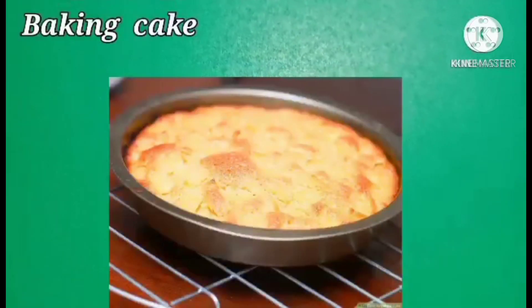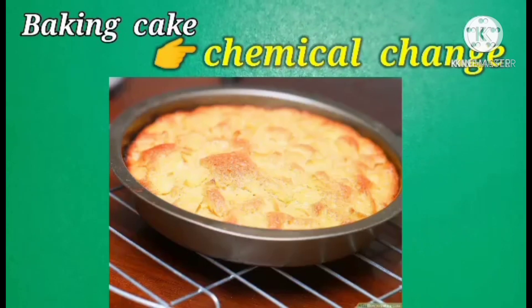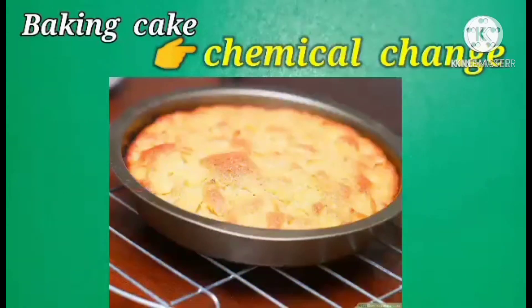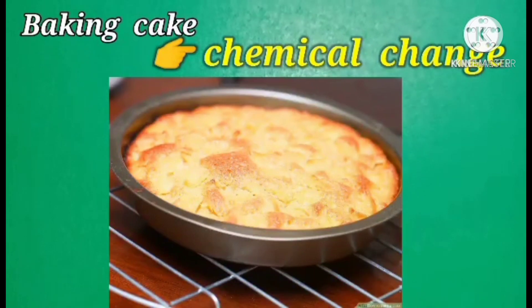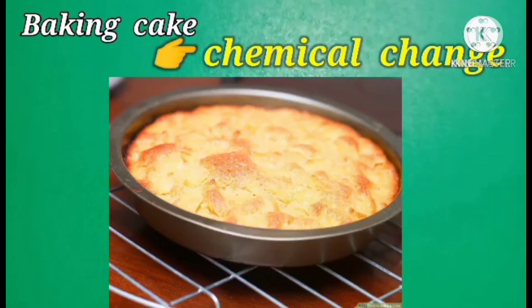Another example of chemical changes is the mixture of baking powder and vinegar. Baking a cake is a chemical change because the baking powder or baking soda will undergo a chemical reaction. The heat helps baking powder or soda produce tiny bubbles of gas, which makes the cake light and fluffy. That's why chemical reactions are involved in baking.